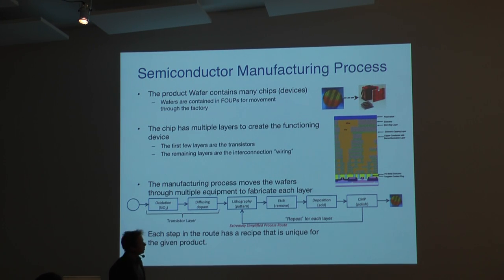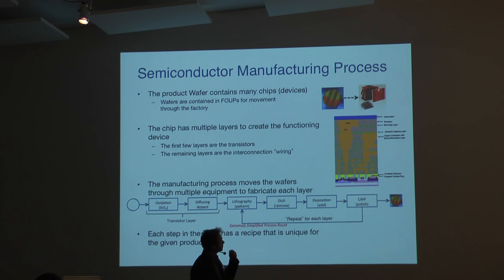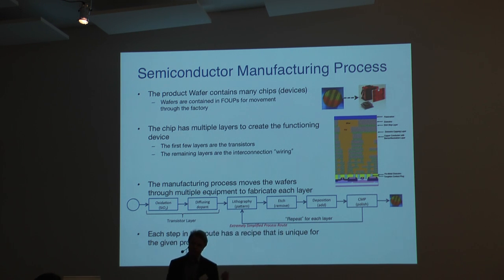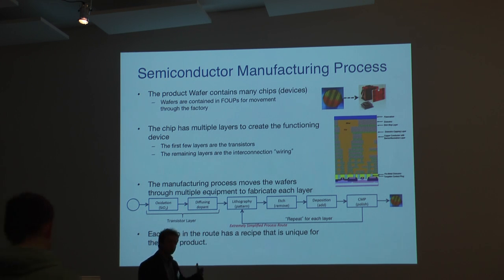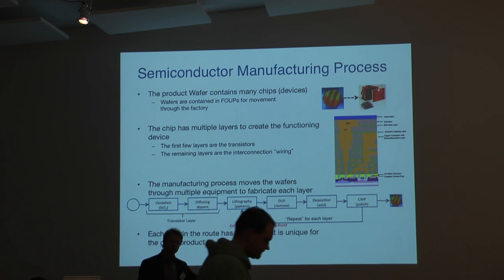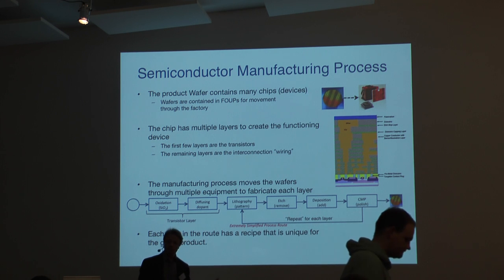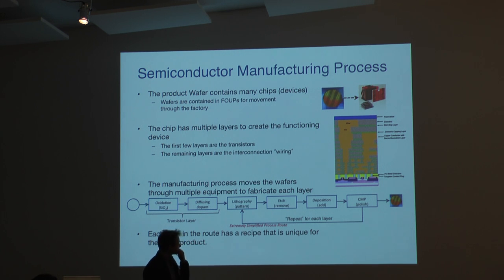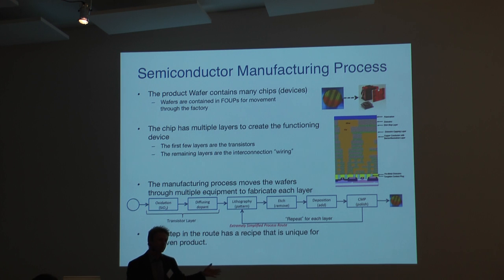What you need to know — everybody knows this at some point but doesn't realize what implications it has for the fabrication process — is that your typical chip consists of multiple layers, and so the production process involves making each layer individually. Your typical microprocessor will go through typically around 1,000 production steps, and that might take something like six weeks.